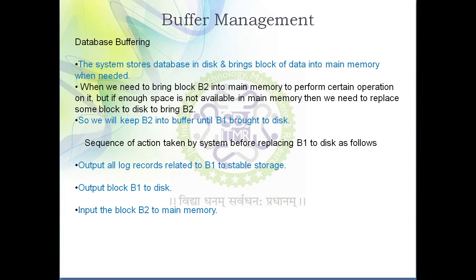The sequence of actions for replacing block B1 is: first, output all log records for B1 to stable storage; then output the block B1 to disk; then transfer B2 from the buffer to main memory for processing. This is how database buffering works.